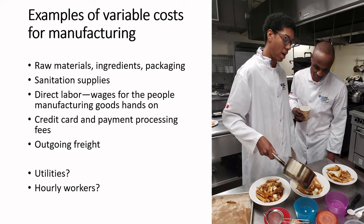Some utilities are split: there's a fixed portion for what it costs just to turn the lights on, but in other cases utilities are based on consumption patterns. For example, if you're running gas burners on fryers or dehydrators and only making 100 units, your utilities will be much lower than if you're making 1,000 units and running those burners much harder. Hourly workers are sometimes calculated as variable costs because changing production volume changes the amount of hourly work you bring in.